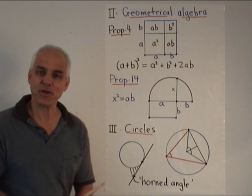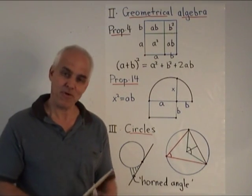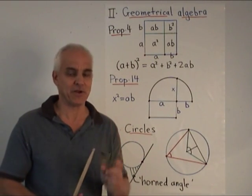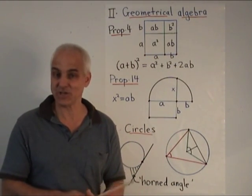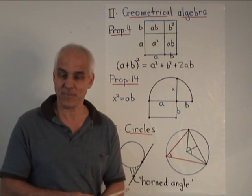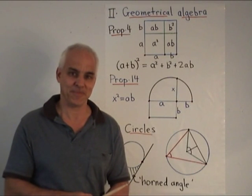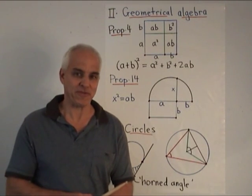Next time we're going to look at book five. Book four is just inscribed polygons. But book five is particularly interesting for foundational issues having to do with irrational numbers. It deals with Eudoxus's theory of proportion. So I hope you're going to join me for that.